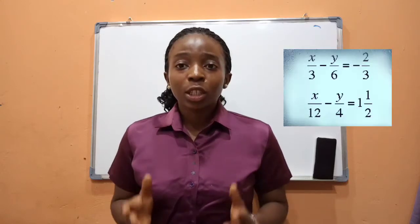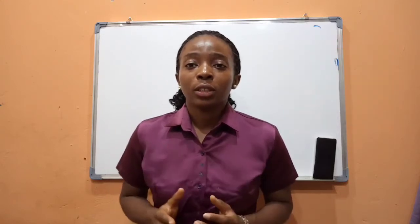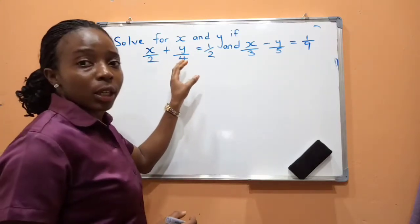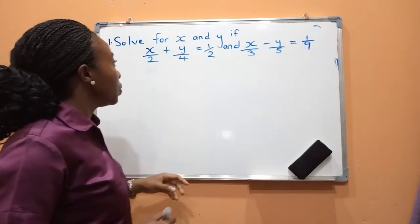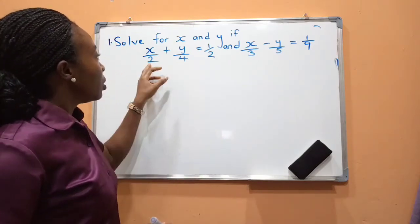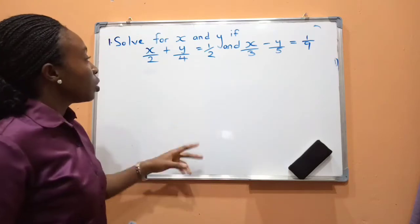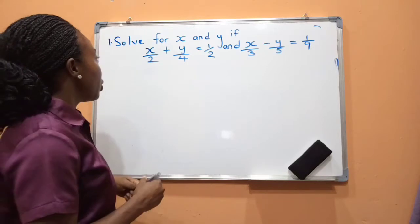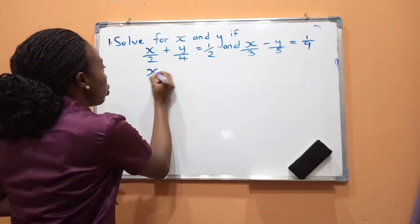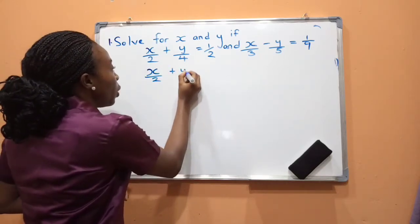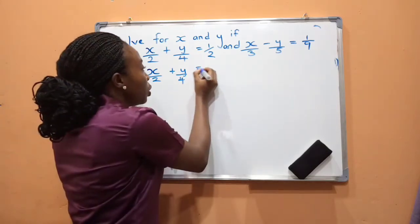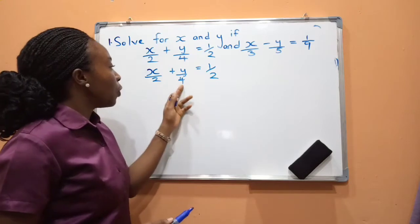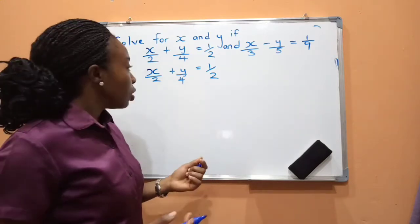Let's take a look at some examples for clarity. When you look at the two equations, you're going to notice that we have denominators. The first step is to find the LCM of the first equation: x/2 + y/4 = 1/2. The LCM of 2, 4, and 2 is 4.